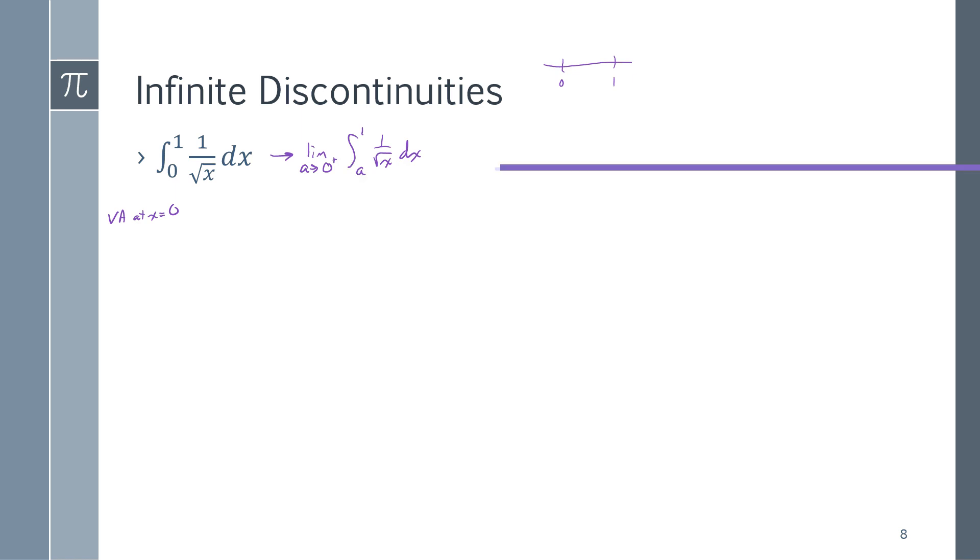Again, focus on the integral first, then worry about the limit. I have the limit as a is approaching 0 from the right. 1 over the square root of x is x to the negative 1 half. The antiderivative of that would be 2 times the square root of x.